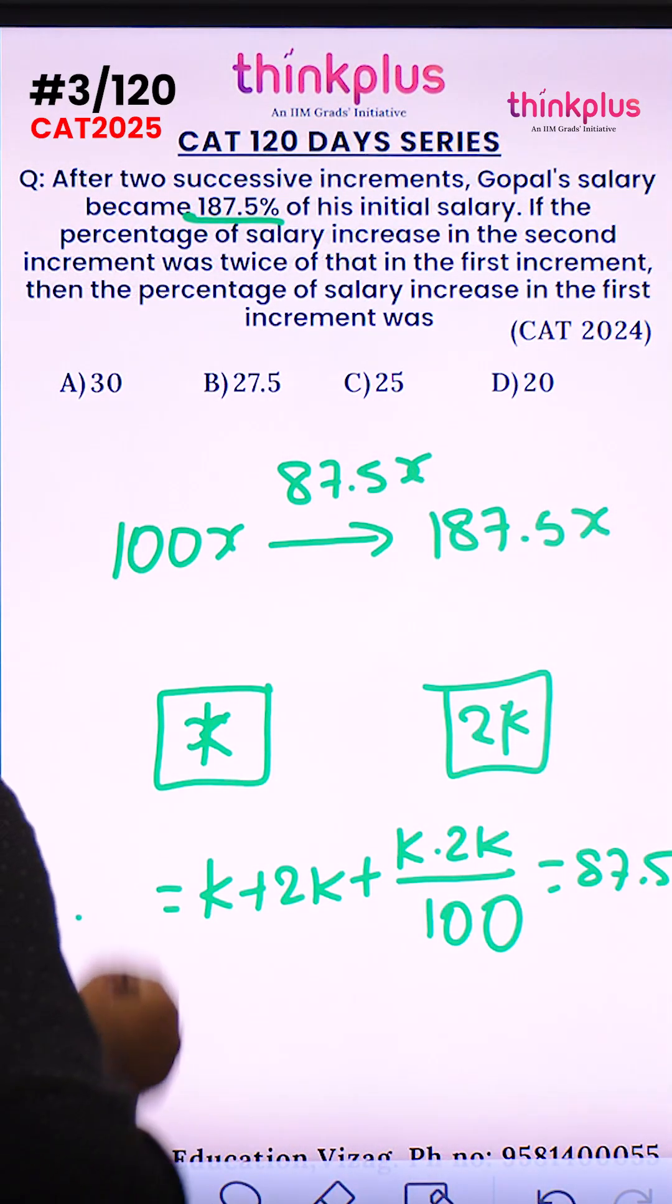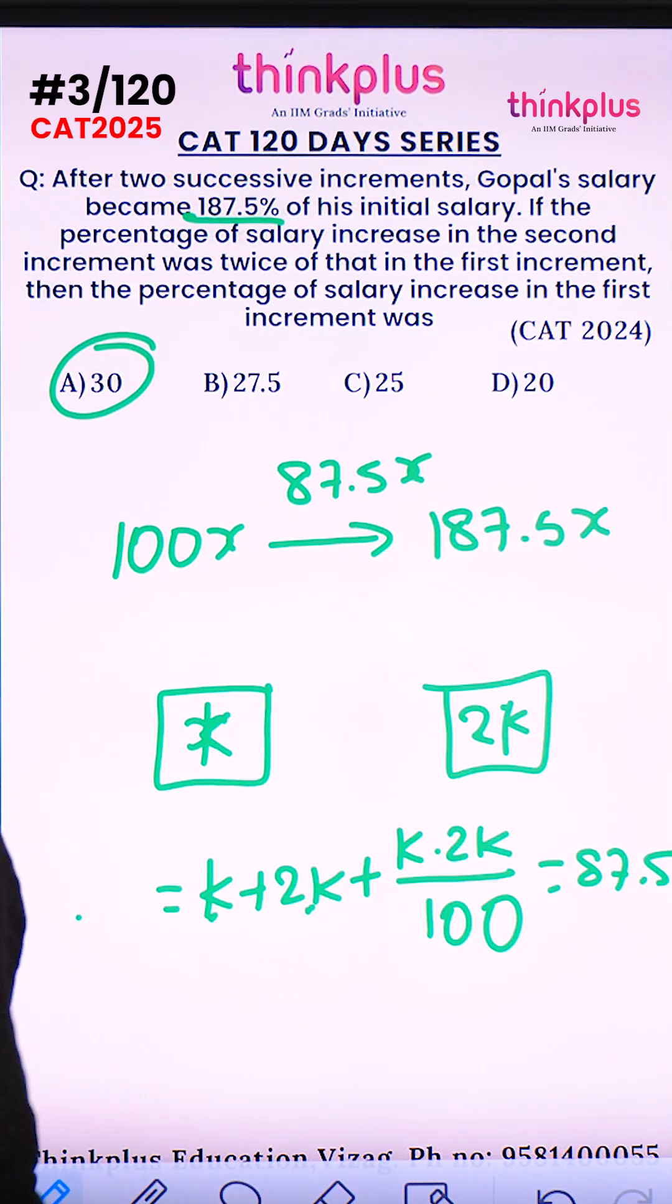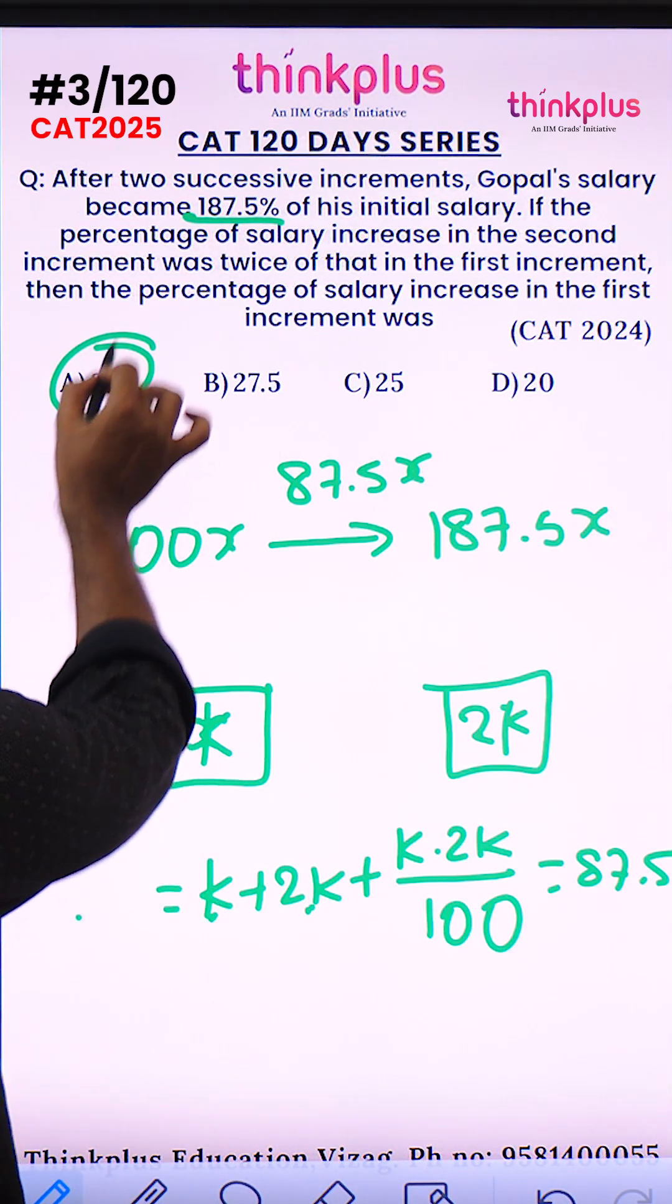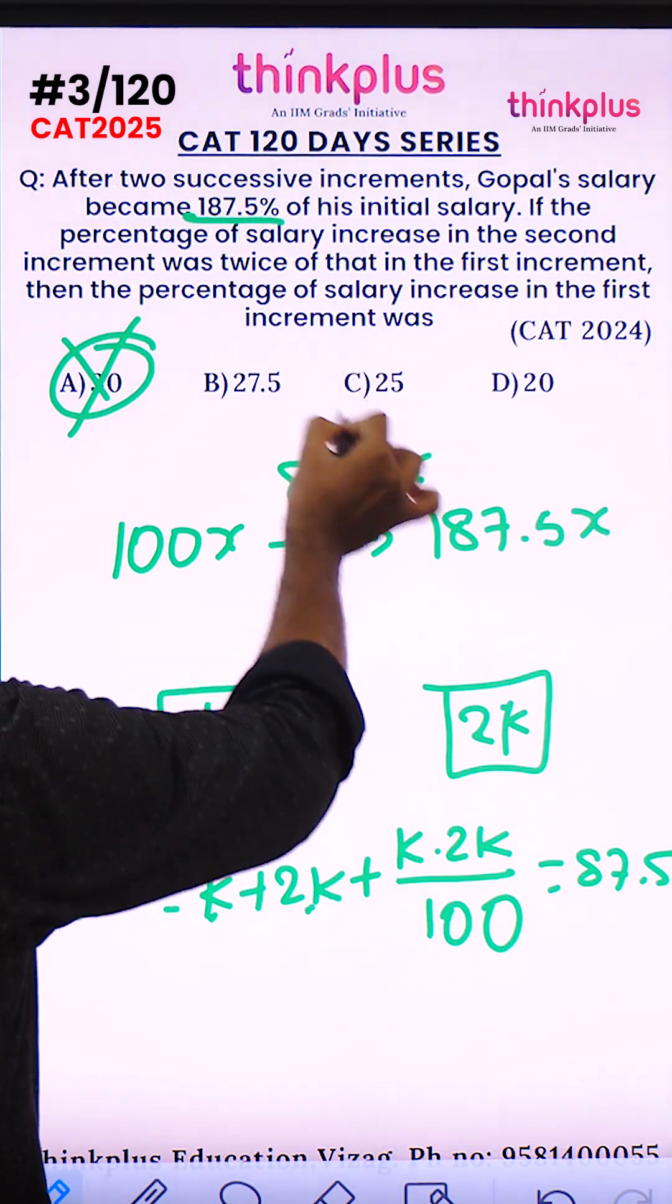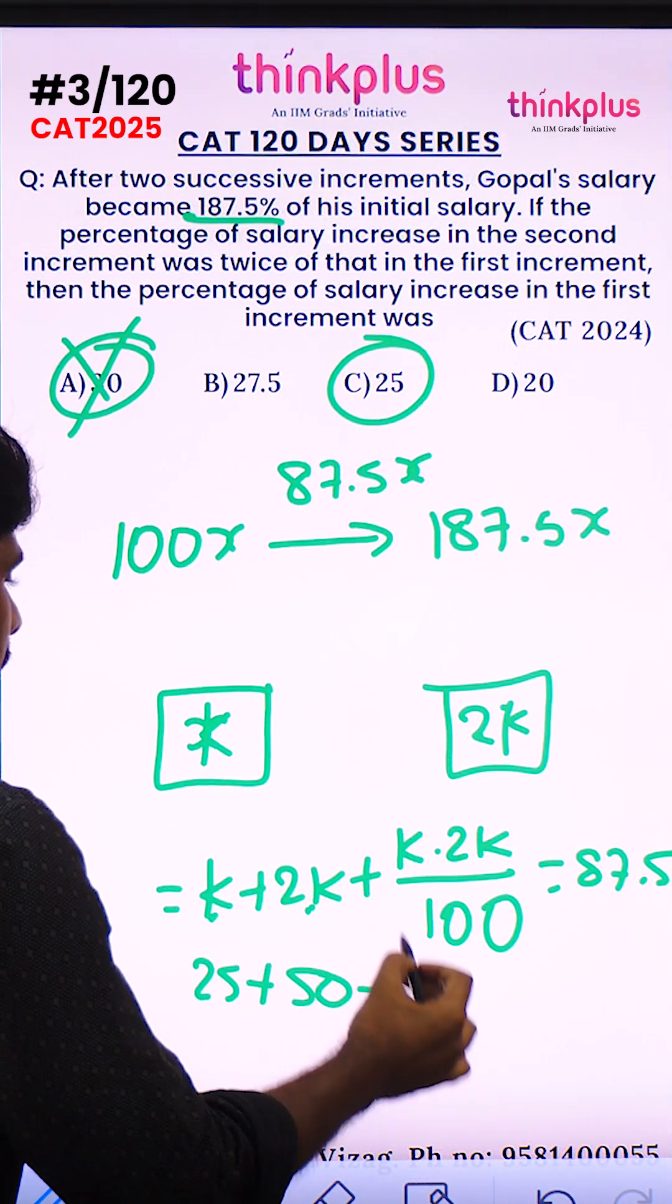If k is 30, then 30 plus 60 equals 90, so 30 fails. Let's take 25. So 25 plus 50 plus 25 into 50 by 100.